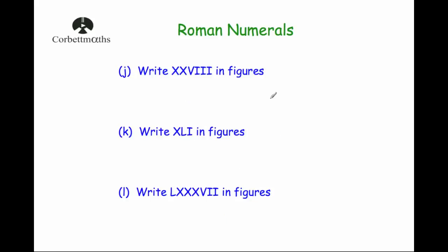Now we're going to write some numbers from Roman numerals into figures. This one — XXVIII — we've got XX which is twenty, and VIII is eight, so that would be twenty-eight. Next example: write XLI in figures. XL is equal to forty, and I on its own is one, so that's forty-one. And the last one — write LXXXVI in figures. LXXX is eighty, and VI is six, so that's eighty-six.